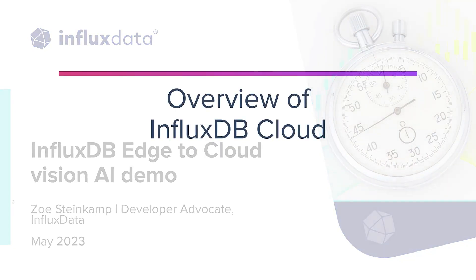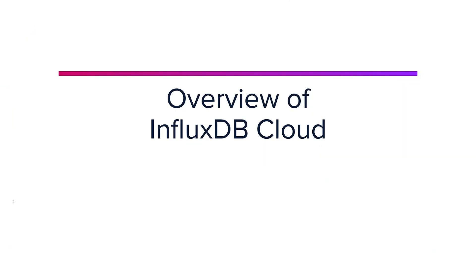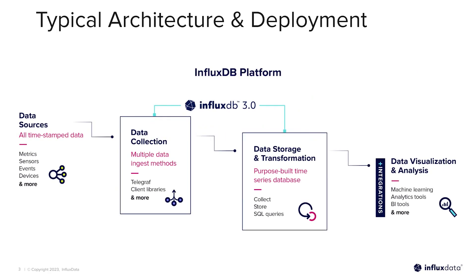First, let's do a quick overview of InfluxDB Cloud. This is the typical architecture and deployment we expect for InfluxDB 3.0. We're still expecting all the same kinds of data sources — all time-stamped data from metrics, sensors, events, and devices. One big thing that sets InfluxDB 3.0 apart from version 2 is that we can now accept more than metrics; we can also accept traces and events.